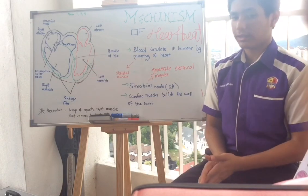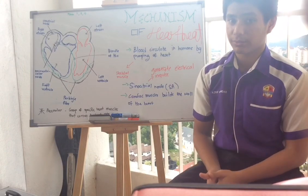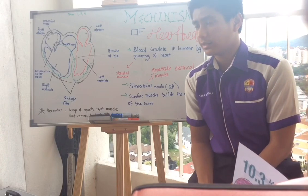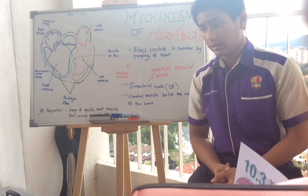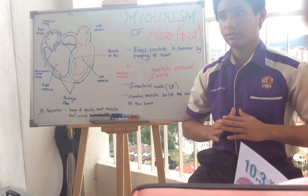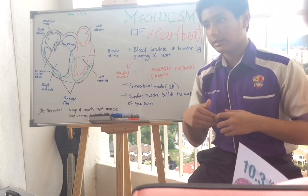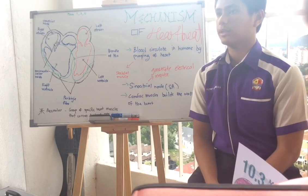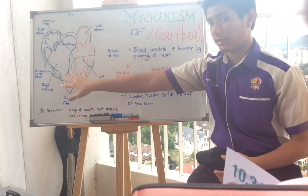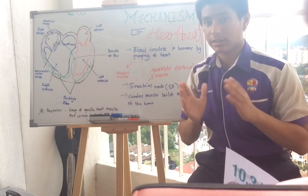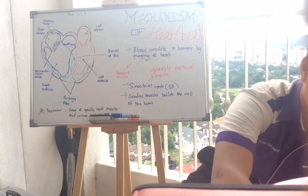Moving on to the sounds of the heart during pumping. The lub-dup sound happens when the tricuspid and bicuspid valves close, producing the 'lub' sound. The 'dup' sound comes from the semilunar valves closing. So after blood flows from the atrium to the ventricle, it must pass through the semilunar valve — when it closes, that produces the 'dup' sound.